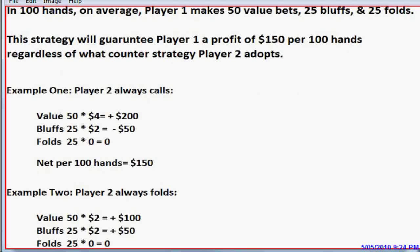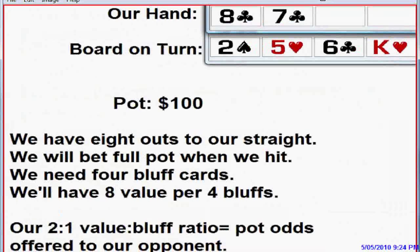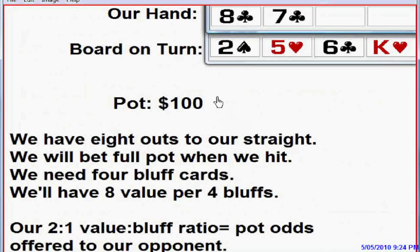Next, we showed how this applies to a real hand. We have the eight of clubs, seven of clubs — a suited connector. We're now on the turn with one opponent, and we are to bet first on the river. The pot is $100. Our plan is to bet out full pot should we make our straight, and we have eight outs to make it. Because when we bet $100 into the $100 pot, we're offering our opponent two-to-one on his call — exactly the same as our little fictitious game. Since our opponent is getting two-to-one, we should have two value hands for every bluff. So if we have eight cards that make our straight, we should have four bluff cards.